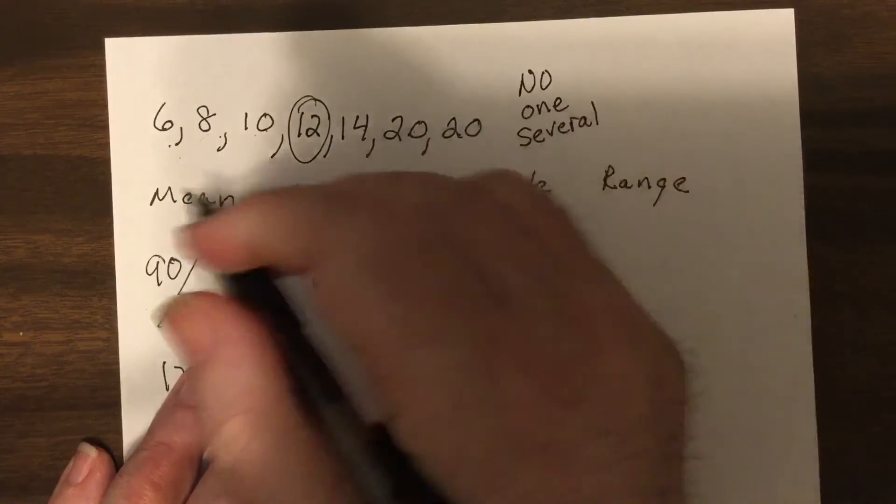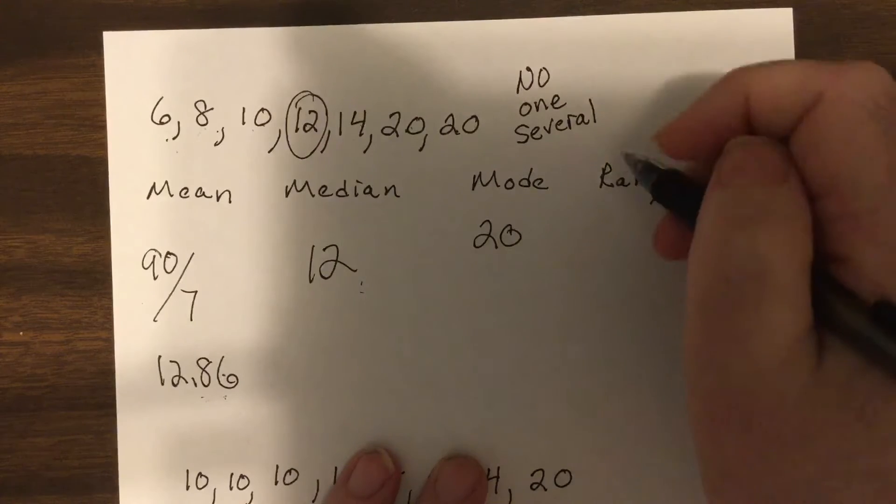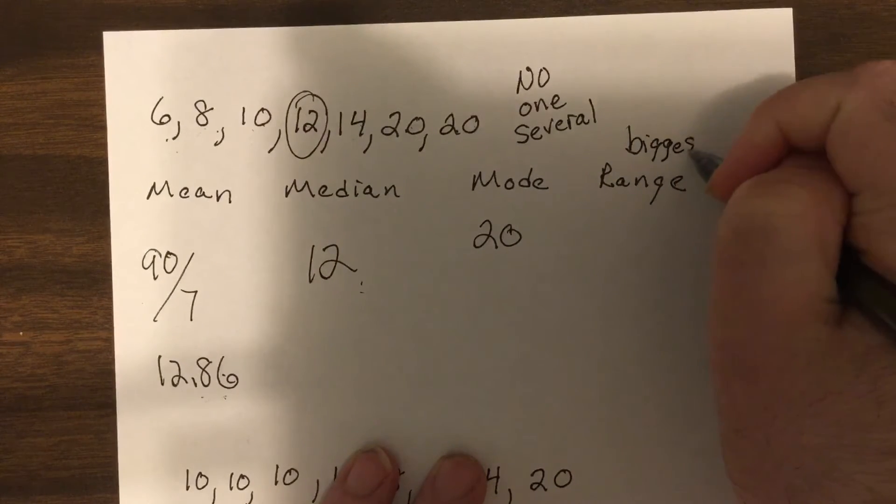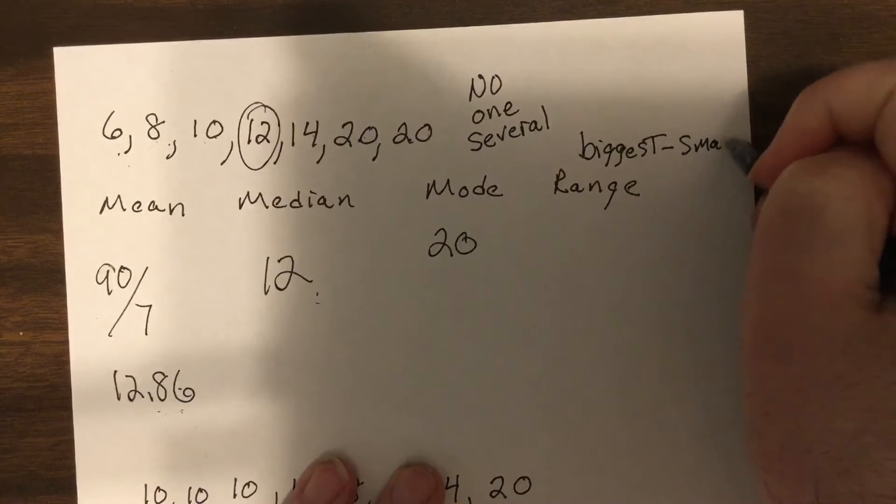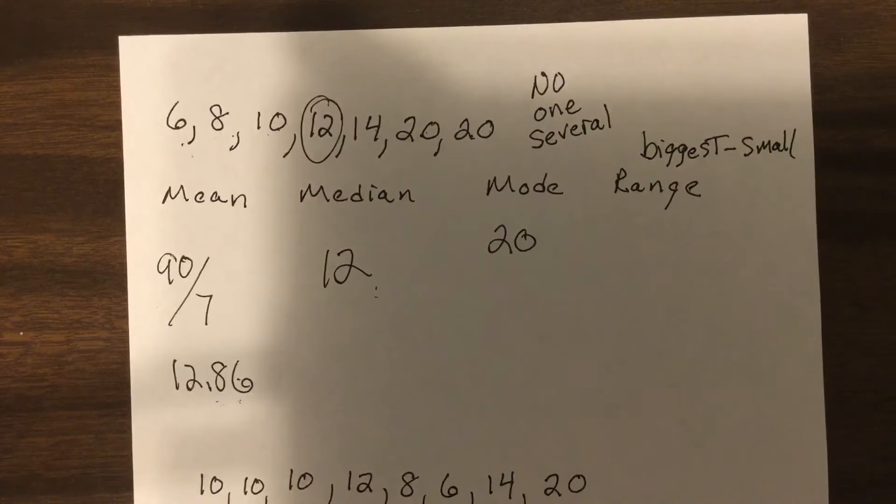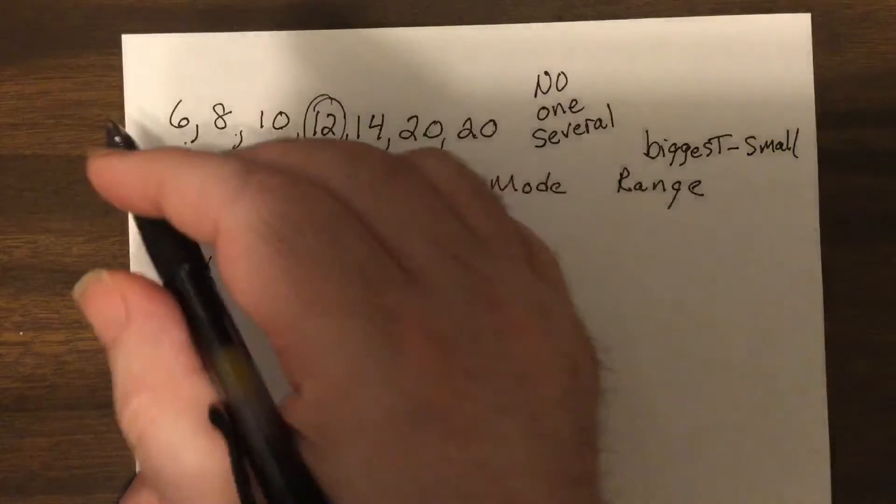And then range is the biggest minus the smallest. Oh I'm running out of room, so we'll say small. So we go 20 minus 6, which equals 14.